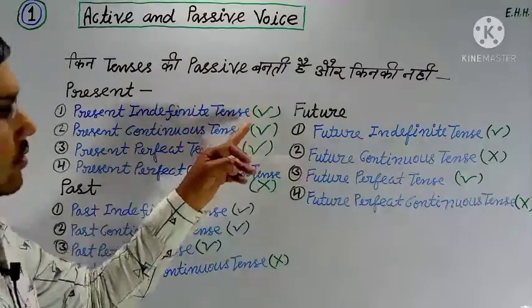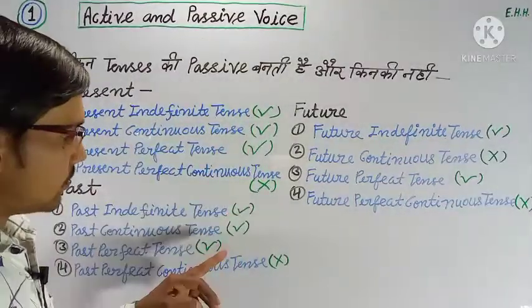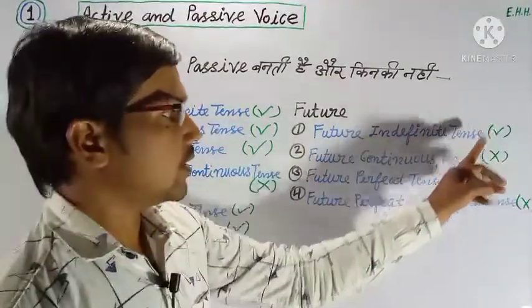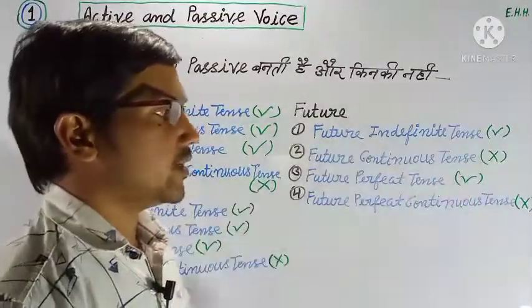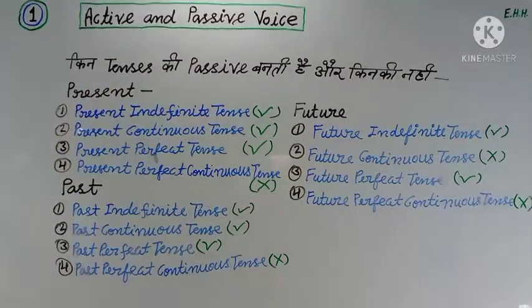So tenses 1, 2, 3, 4, 5, 6, 7, and 8 — these 8 tenses form passive voice.